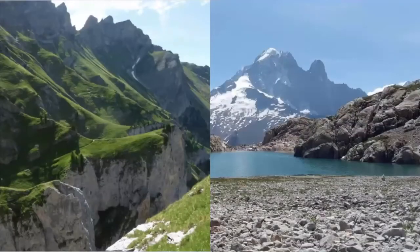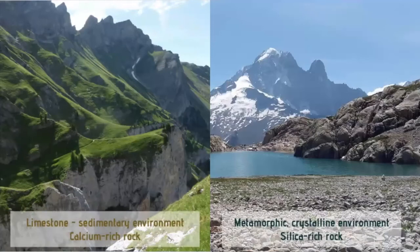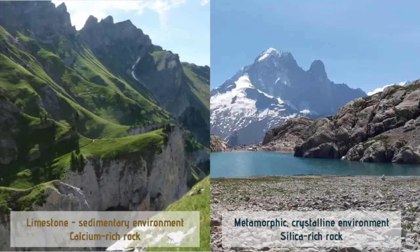Geology not only affects the morphology of the land but the movement of water and the rate of erosion, and these contrasting geologies play a major role in the distribution of flowers. We have limestone — throughout this presentation, the limestone or calcium-loving species will be on the left-hand side, and the calcium-hating or silica-rich rocks and calcifuge species on the right-hand side. We'll illustrate this vicariants through a series of species.